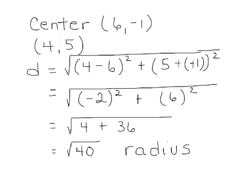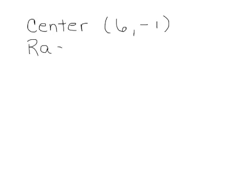Okay, so again we have the center right here and the radius right here. So let's recap that information one more time. The center we had was (6, -1) and the radius square root of 40, and now we're ready to put that into our equation of a circle.